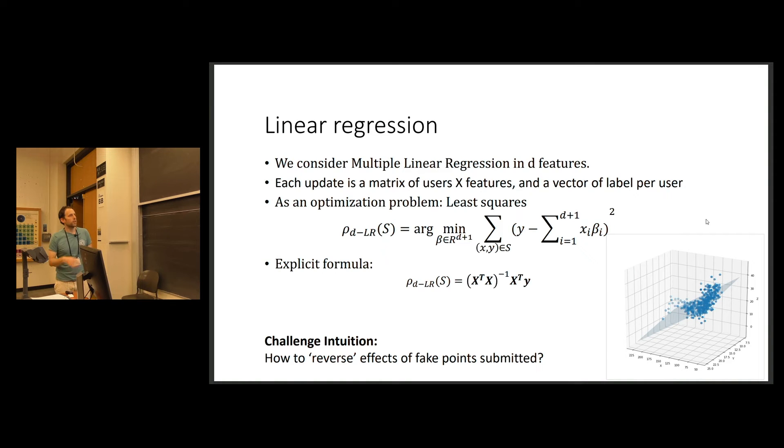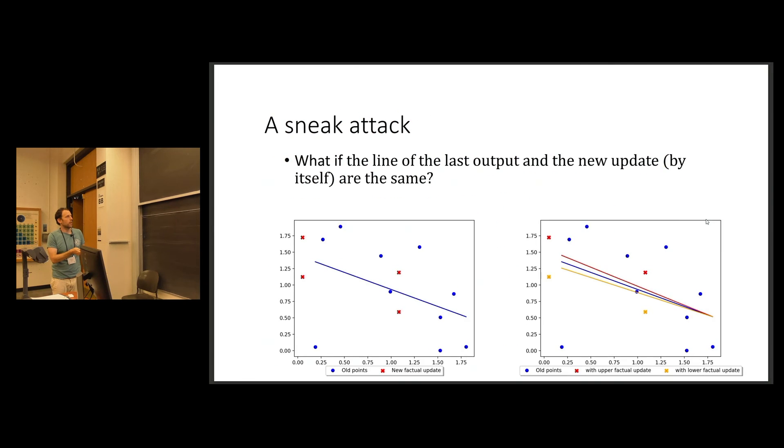And so let's see how this applies to linear regression. So linear regression, it's an optimization problem and we have an algorithm and a formula to do it. And so the main challenge in linear regression would be how to reverse the effects of fake points that you submit. So let's say you wanted to attack, you wanted to mislead others, you would submit maybe some wrong points. But then later when more updates come, you want to somehow reverse it to know what's going on.